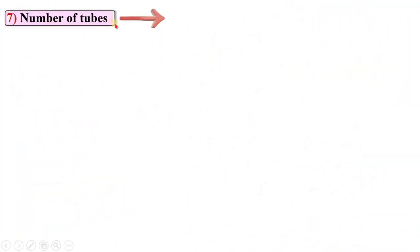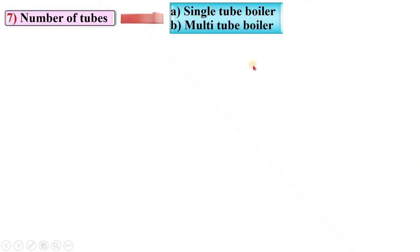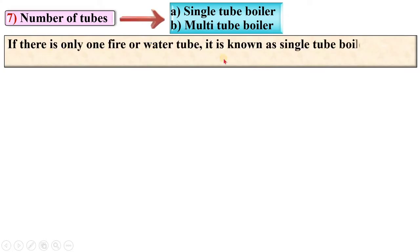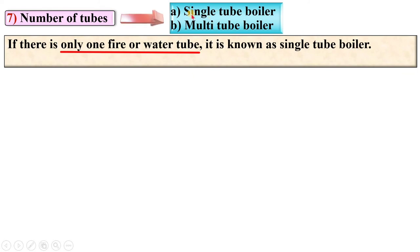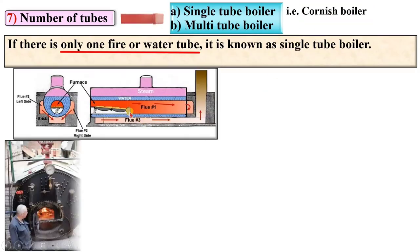According to the number of tubes, boilers are classified as single tube boilers and multi-tube boilers. If there is only one fire or water tube, it is known as a single tube boiler — the name itself indicates this. The example is the Cornish boiler.